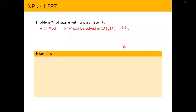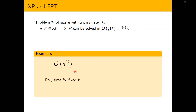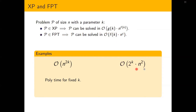I will begin with a very brief introduction of parameterized complexity. Consider a problem P associated with parameter k. We say that P is in XP if P can be solved in time n to the power of f(k). For example, an algorithm that solves P in time n to the power of 2k is an XP algorithm for P. This is polynomial time for fixed k. We say that P is in FPT if P can be solved in time f(k) times a polynomial in n, where the polynomial exponent of n is independent of k.